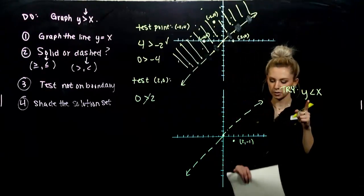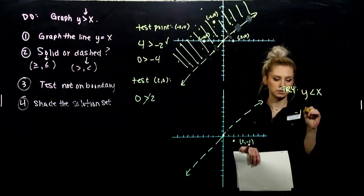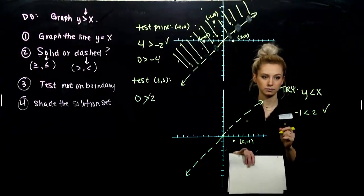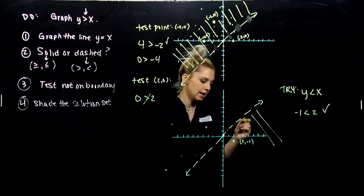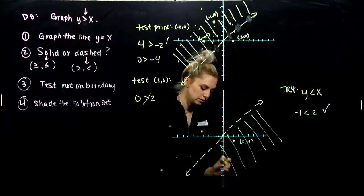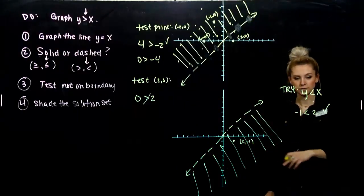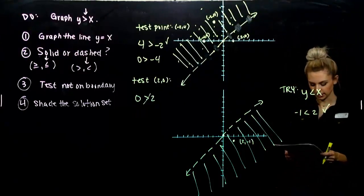Two, minus one. If I plug that in, so my y value is minus one, is minus one less than two. Yeah. So I should be shading anything that includes any side, any of those points that includes where we've had that successful test point.